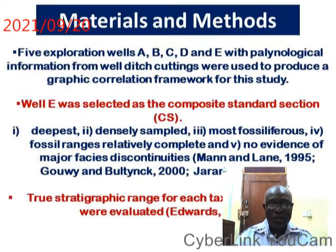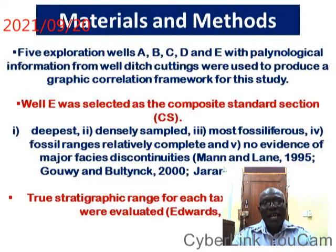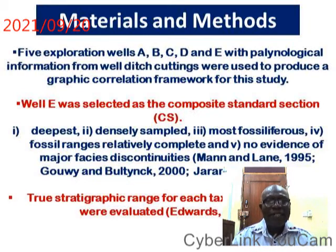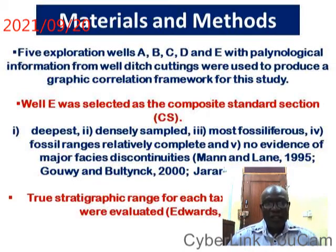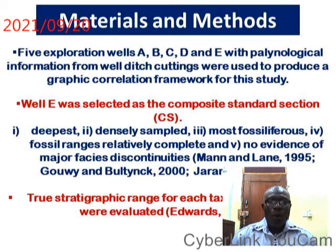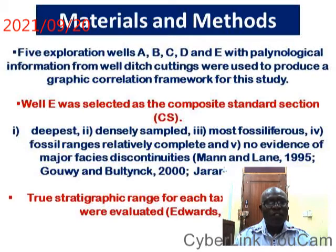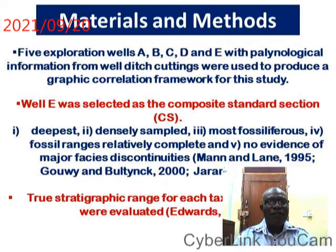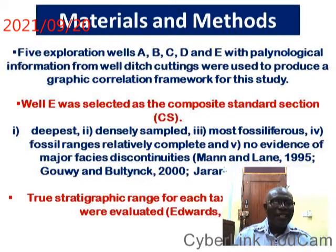Materials and methods. Materials used in this study are five exploration wells designated as A, B, C, D, and E, with their paleontological information derived from well ditch cutting samples. They were used to produce a graphic correlation framework for this study. In the formation of the graphic correlation framework, well E was selected as the composite standard section.